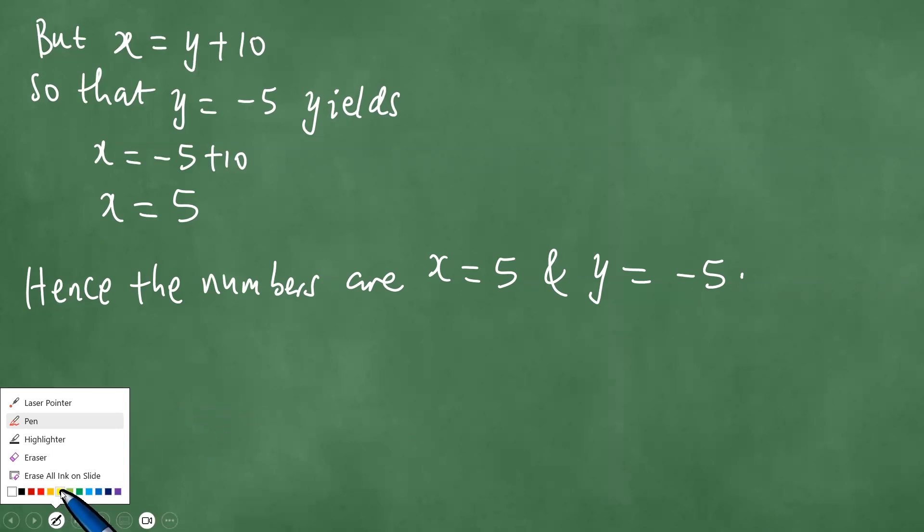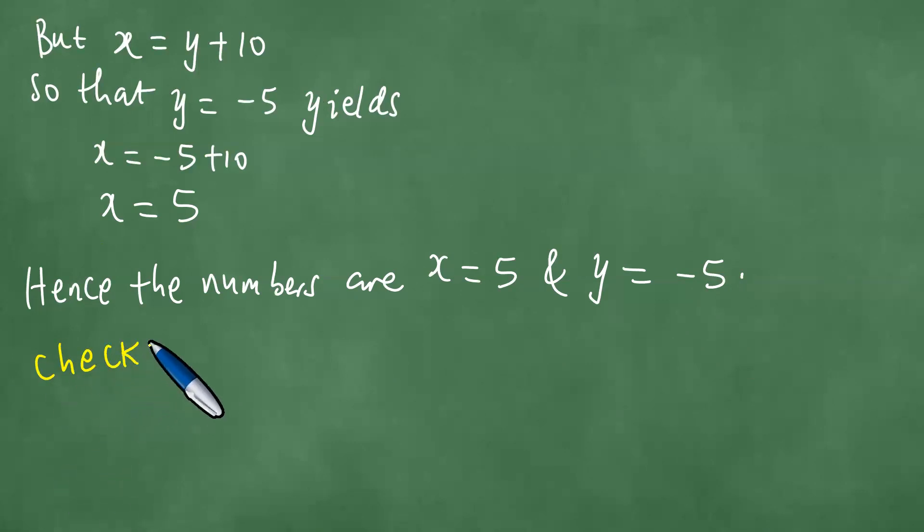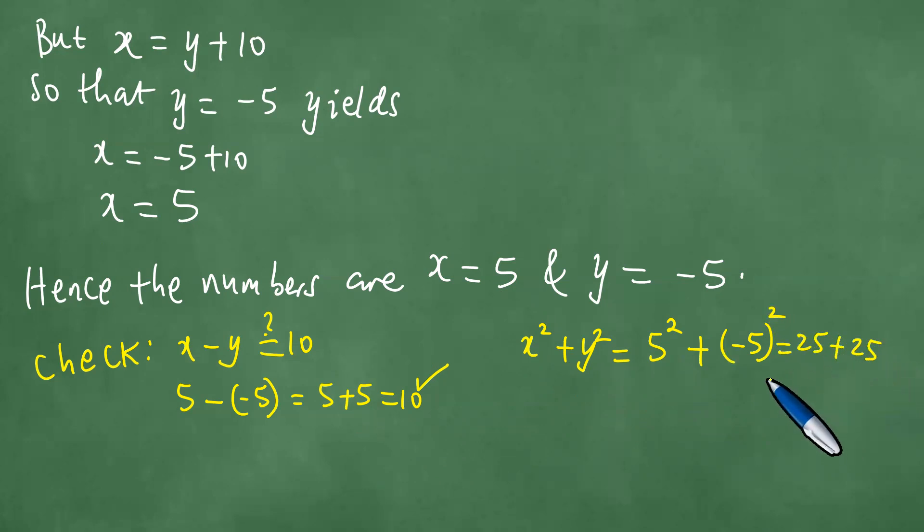Let's do a quick check. The difference of the numbers, is this 10? We substitute x is 5, y is minus 5, and this is 5 plus 5, which is 10. Next, the sum of the squares, x squared plus y squared. It's 5 squared plus minus 5 squared, 25 plus 25, and the sum is 50.